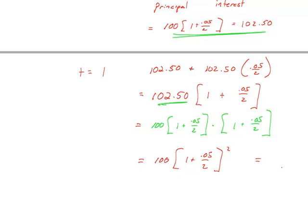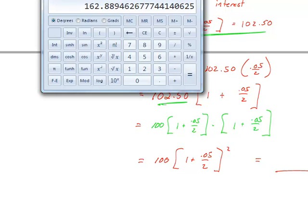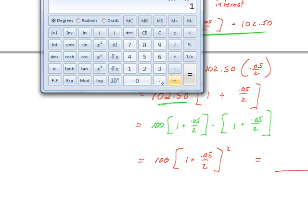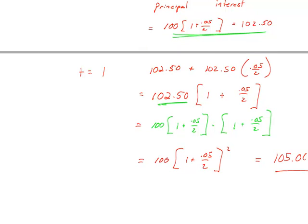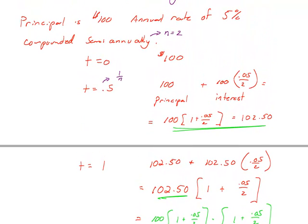We can put this into a calculator: 100 times (1 plus 0.05 divided by 2) squared gives $105.0625, or roughly $105.06. Comparing this to compounding annually, we earned a little extra money by reinvesting interest earlier. This extra $0.06 is added to the account because I'm compounding two times per year.